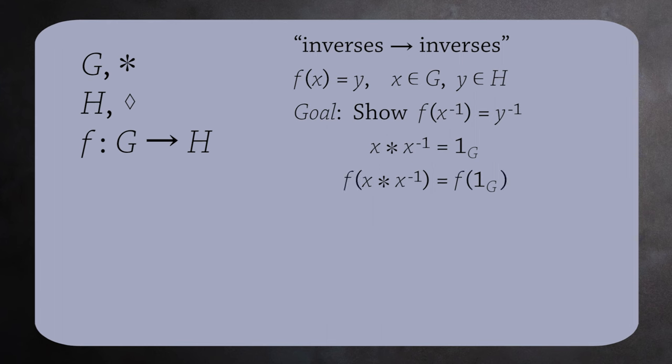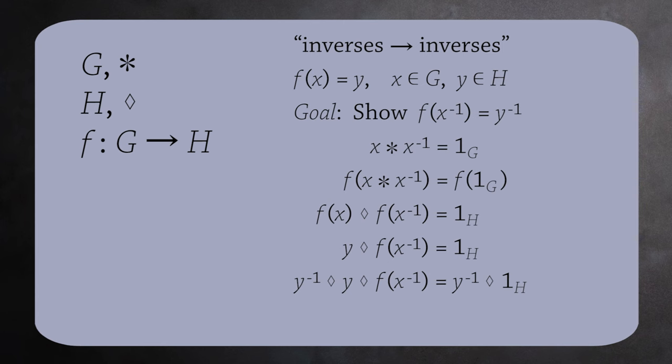If you apply f to both sides, you get f of x times x inverse equals f of one sub G. We just showed that f of one sub G equals one sub H. And on the left, we can use the property of homomorphisms to get f of x times f of x inverse equals one sub H. F of x equals y, so we get y times f of x inverse equals one sub H. Multiplying both sides on the left by y inverse gives us f of x inverse equals y inverse. This proves that homomorphisms send inverses to inverses.